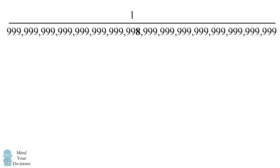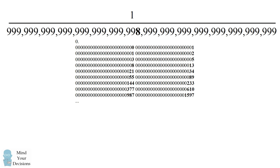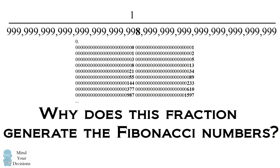The internet is going crazy over this fraction. If you look at its decimal representation, every 24-bit string has a Fibonacci number in order. Why is this fraction generating the Fibonacci numbers? What's going on?